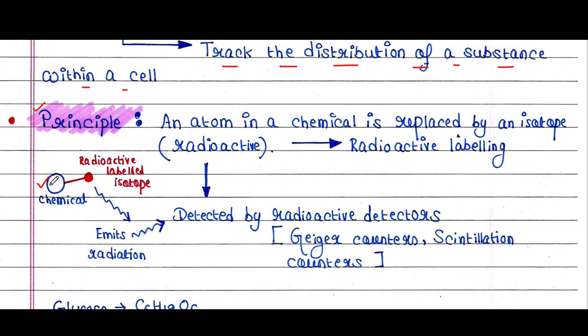In this case, an atom of this chemical compound is replaced by an isotope, and this isotope is radioactive. This process is called radioactive labeling.